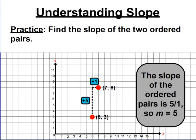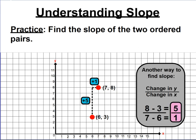The slope is 5 over 1, or 5, because the rise — the vertical change — is positive 5, and the run — the horizontal change — is positive 1. Make a ratio out of those, you get 5 to 1, which can be written just as 5. So in this example, m, or the slope, equals 5. The other way to find that is subtracting your y-coordinates and x-coordinates: y-coordinates are 8 and 3, so 8 minus 3 gives 5 on top. The x-coordinates are 7 and 6, so 7 minus 6 is 1. That gives you the same slope you would have gotten by counting the rise and run on the graph.